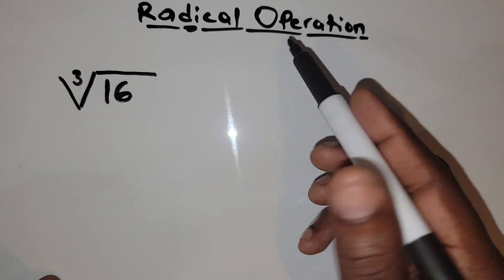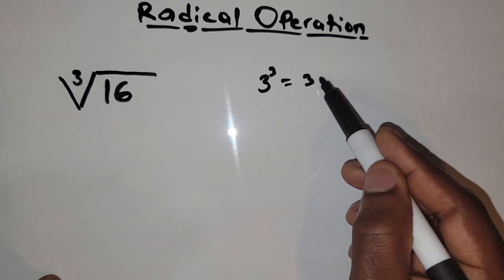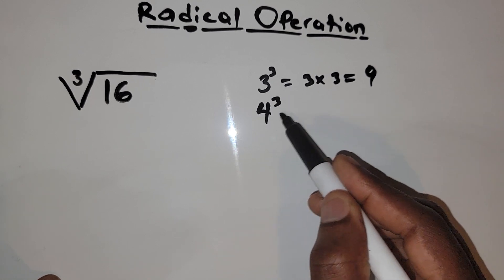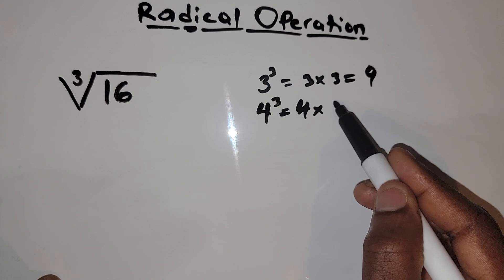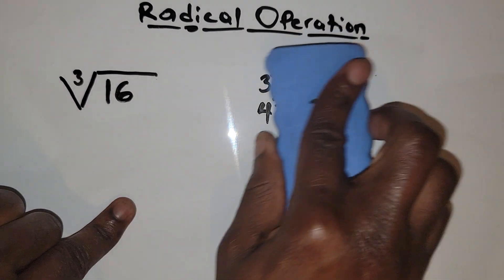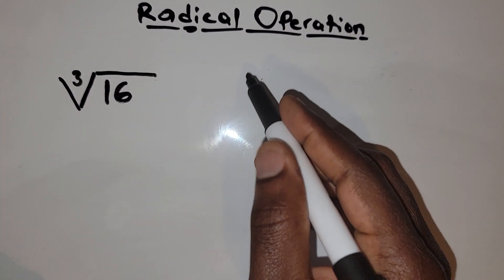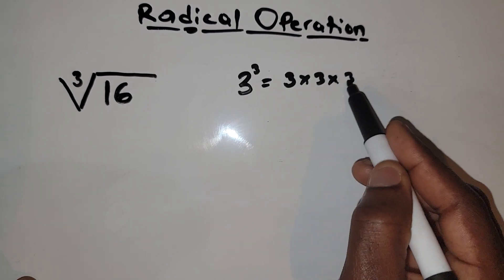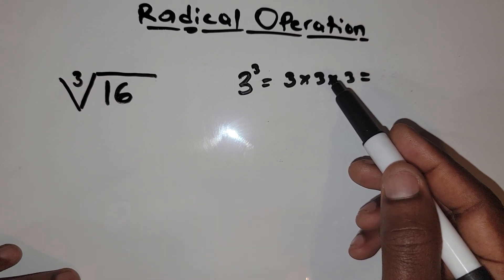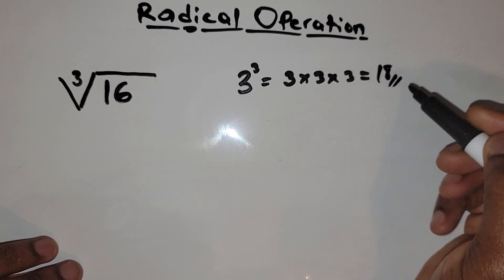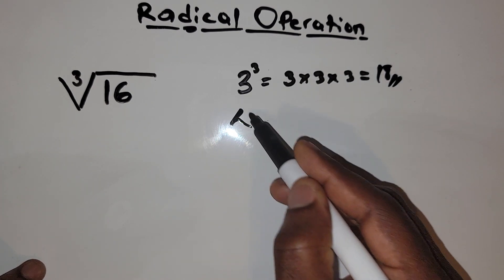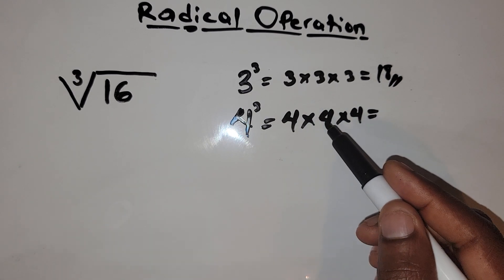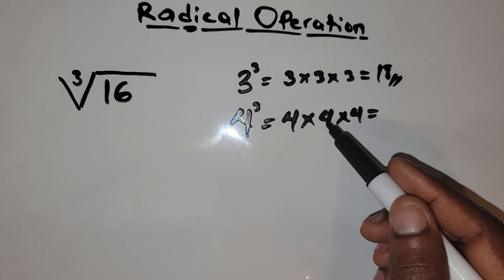When we talk about cubes, I mean something like 3 cubed, which is 3 times 3 times 3. 3 times 3 is 9, and 9 times 3 is 27. And 4 cubed is 4 times 4 times 4. 4 times 4 is 16, and 16 times 4 is 64.